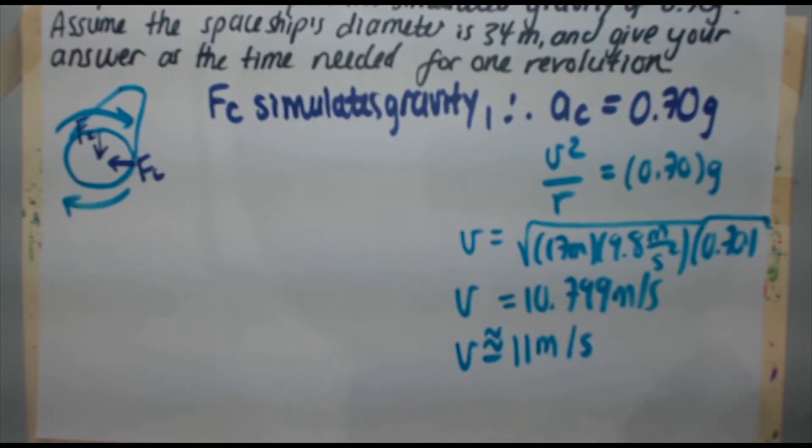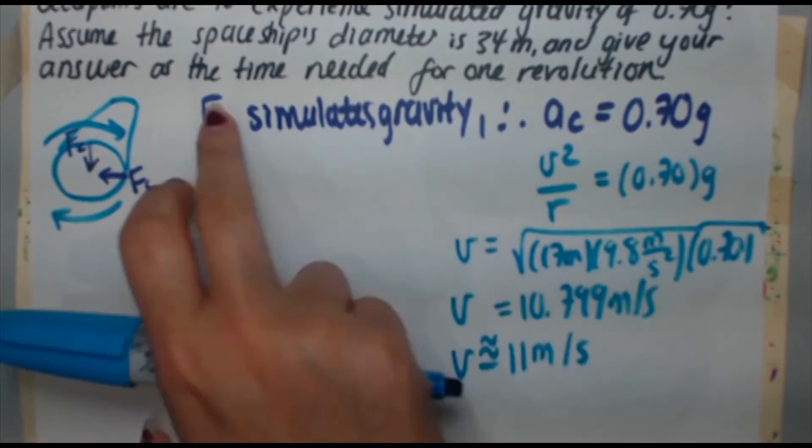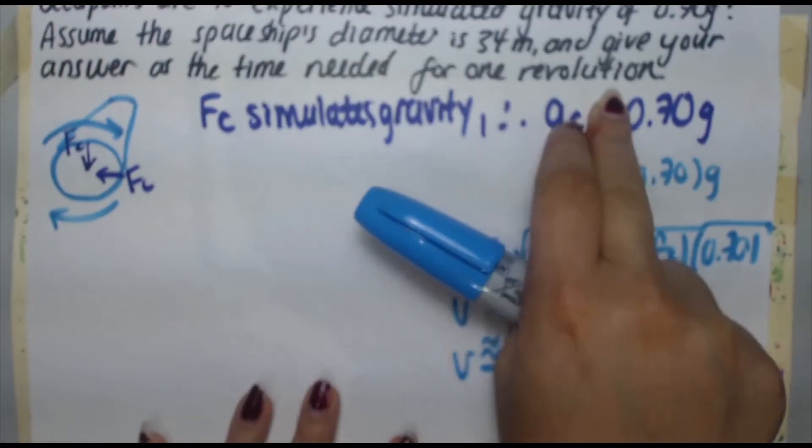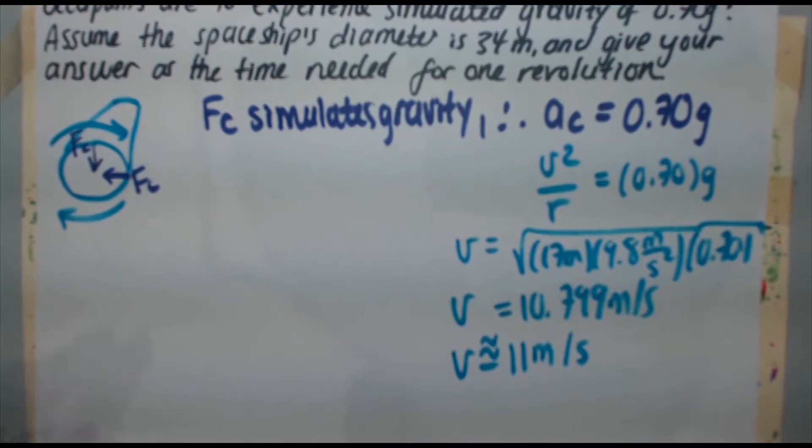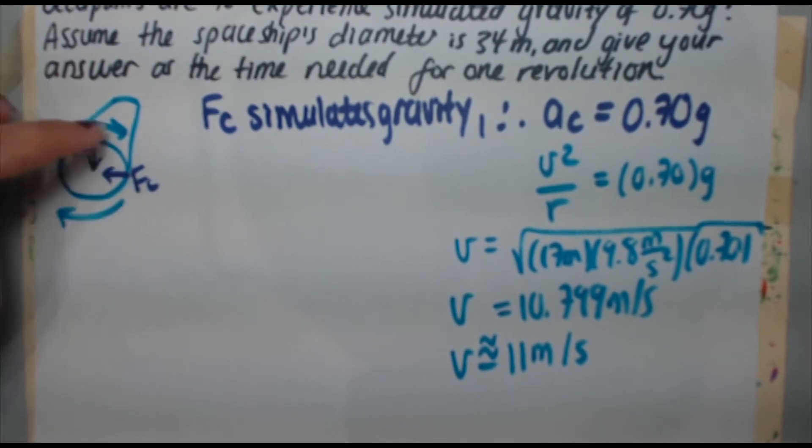Now the question asks us give your answer as the time needed for one revolution. So when things move in a circular fashion, the distance you travel is that of the circumference of a circle and here's your speed.